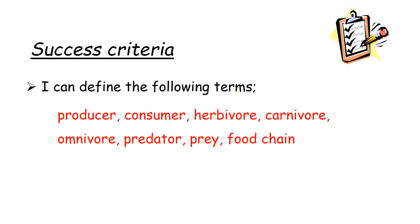So we're going to learn about producers, consumers, herbivores, carnivores, omnivores, predators and prey, and we're going to look at food chains and their importance as well.